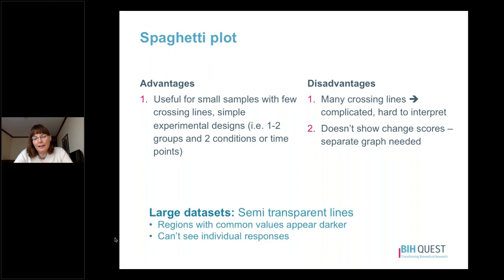With large data sets, one technique is to show semi-transparent lines for each individual. Regions where many participants are clustered will have darker lines because the semi-transparent lines overlap, producing more density in that area. The disadvantage of this approach is that you can't see individual level data — you can get a sense of which regions have more data points, but you won't be able to see responses for one person versus another.